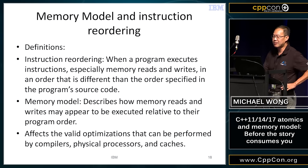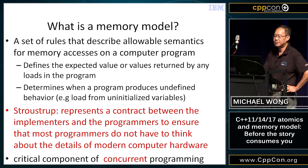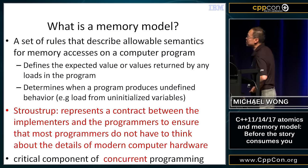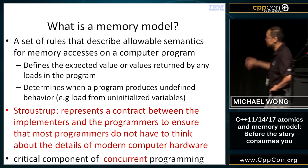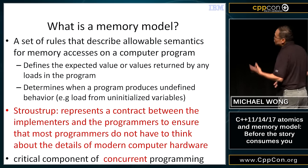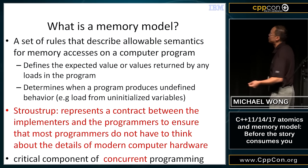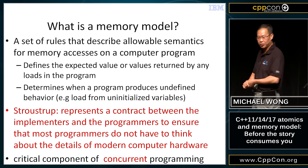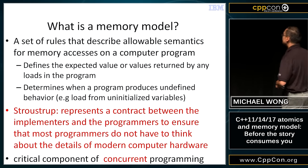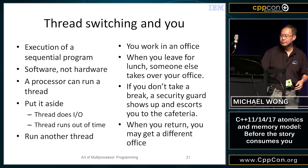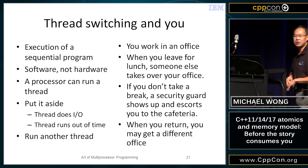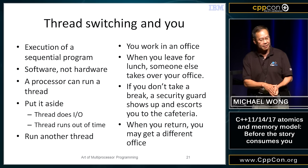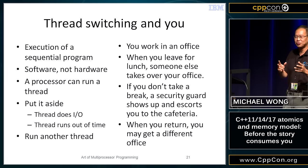What is a memory model? Stroustrup said it's a contract between the implementers and the programmers to ensure that most programmers do not have to think about the details of modern computer hardware. Paul tells me it's a critical component of concurrent programming. To understand that, I'm going to spend a little time looking at what cache coherency means.